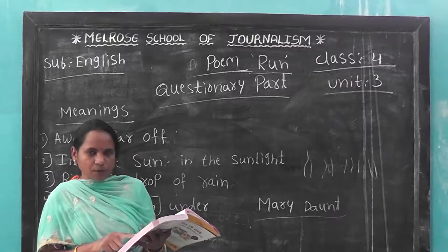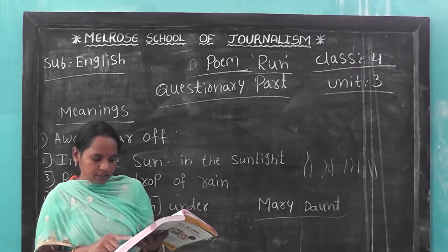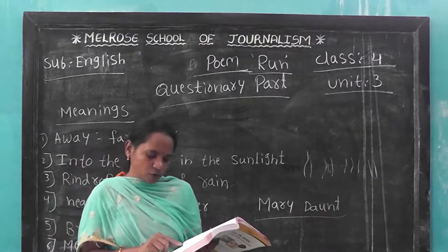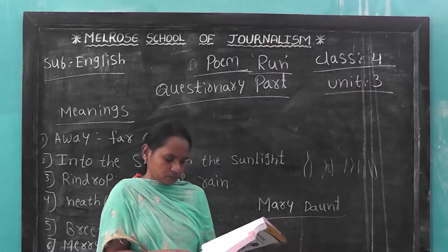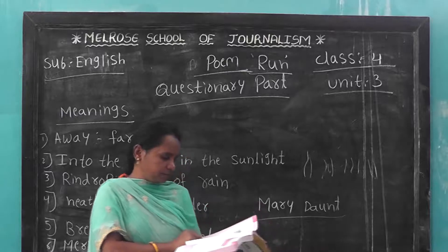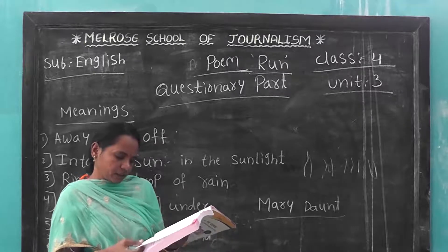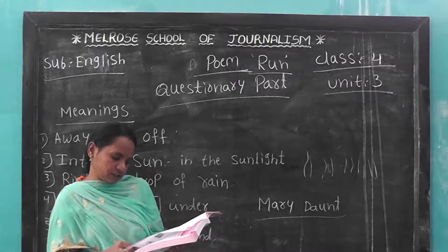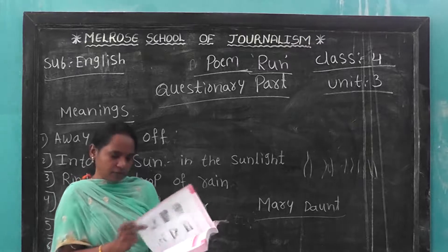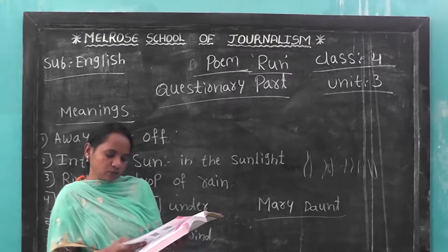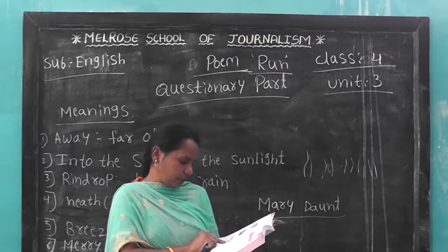Now answer the questions by looking at the picture on the opposite page. What is happening in picture 5? The girl is diving into the water. Where is the girl diving from? The girl is diving into the water. What is Mohan practicing in picture 4? See here — what is he practicing?